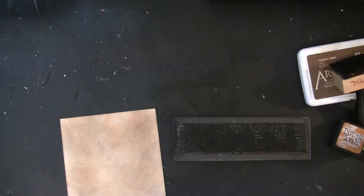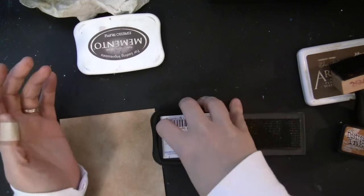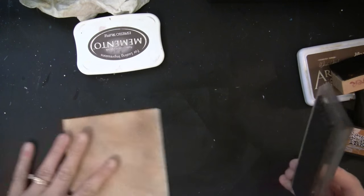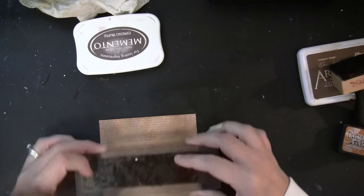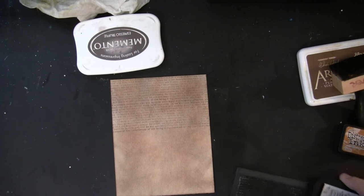So for my stamping, I'm using Penny Black Footnote Stamp. I use this all the time, and I'm inking that with Memento Espresso Truffle ink and just stamping, working my way down the panel. And I'll do the whole panel.